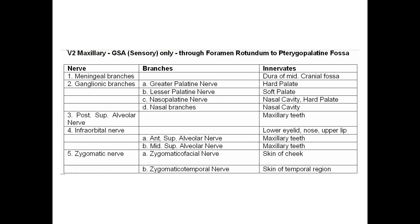The branches of the maxillary nerve include: a meningeal branch to the dura of the middle cranial fossa; ganglionic branches through its roots; the greater palatine nerve for the hard palate; the lesser palatine nerve for the soft palate; nasal palatine nerve for the nasal cavity and the hard palate; and nasal branches to the nasal cavity.